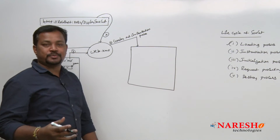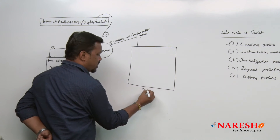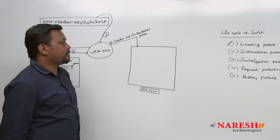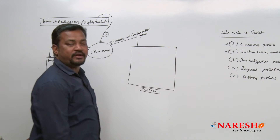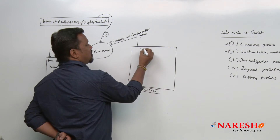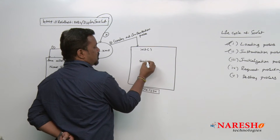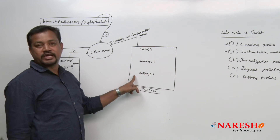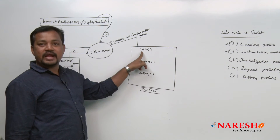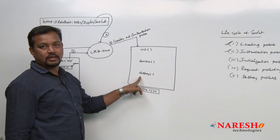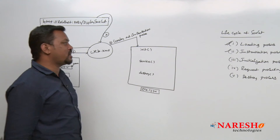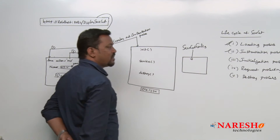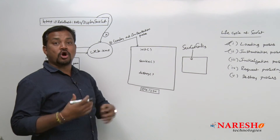Instantiation process means creating an object — imagine one object at reference 0x1234. After loading and instantiation, when it has been instantiated, here we have one init method, one service method, and one destroy method. These three are called life cycle methods: init method, service method, and destroy method. While this instantiation process is going on, one object is created for your ServletConfig to hold configuration details.